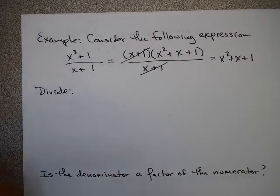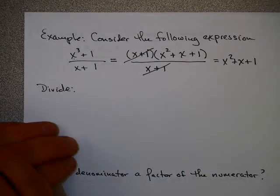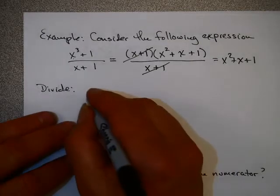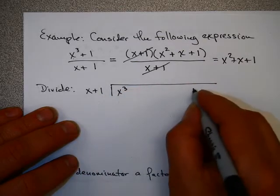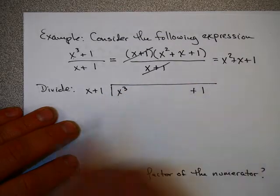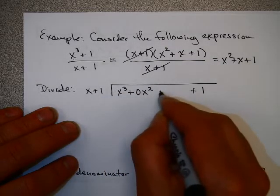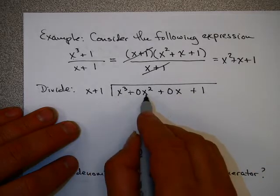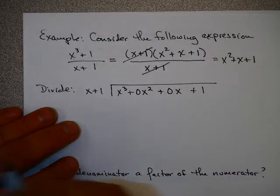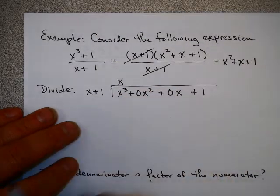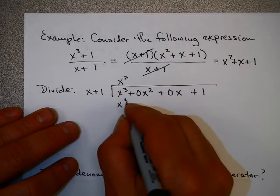Now since x plus 1 is a factor of the numerator and the denominator, there's a hole at x equals negative 1. If you have to divide that by long division, it's a little bit more complicated. Notice I have x cubed and then I jump down to 1, and just as in the last problem, I'm going to add some of my missing terms. My missing terms are an x squared term and an x term, and adding 0x squared and 0x doesn't change anything. What do you multiply x by to get x cubed? That would be x squared. x squared times x is x cubed. x squared times 1 is this.